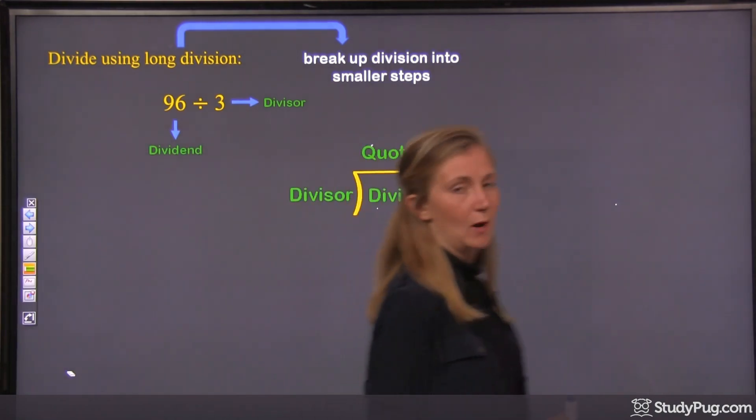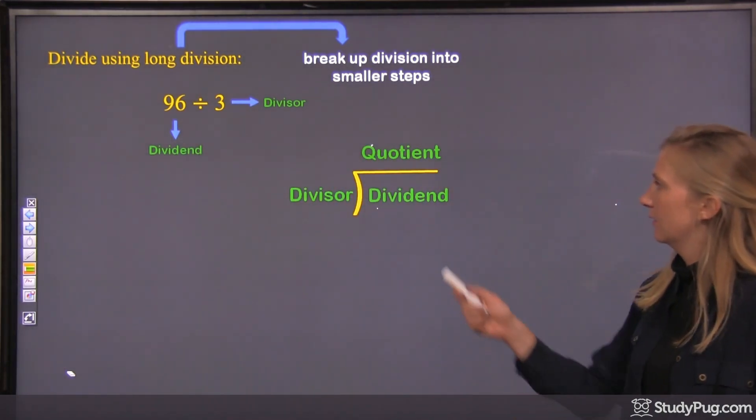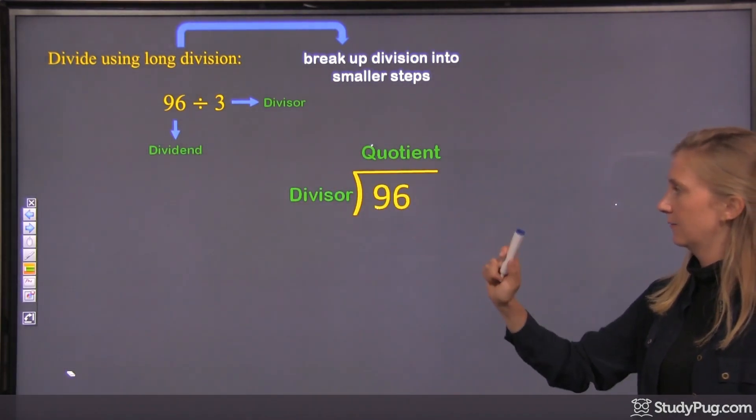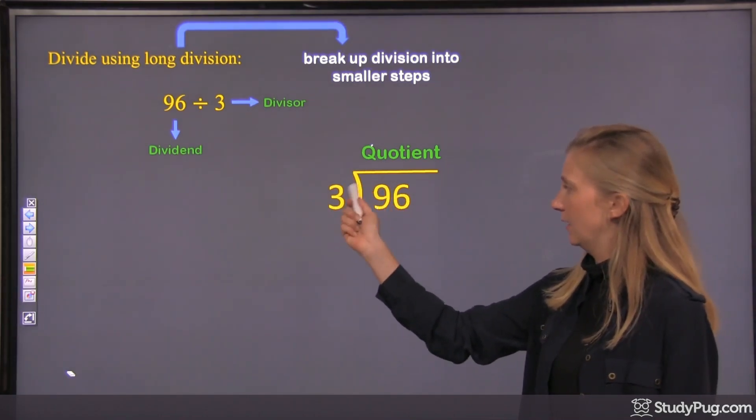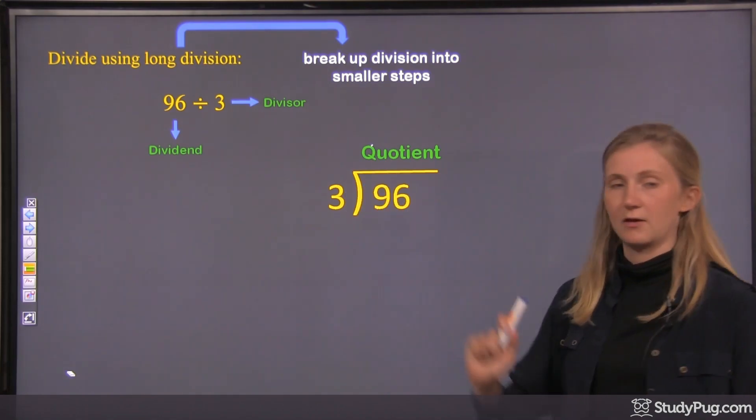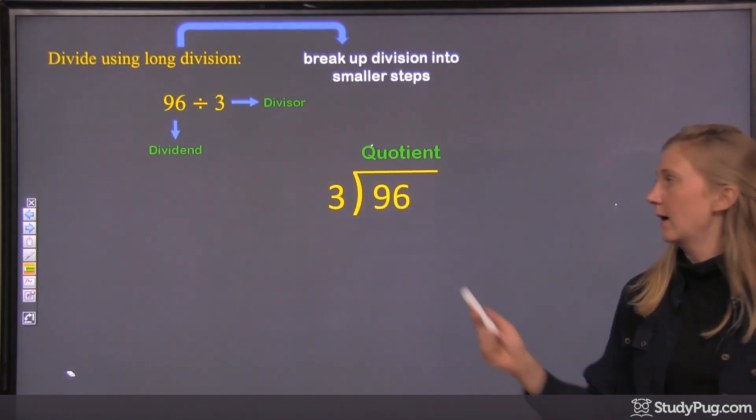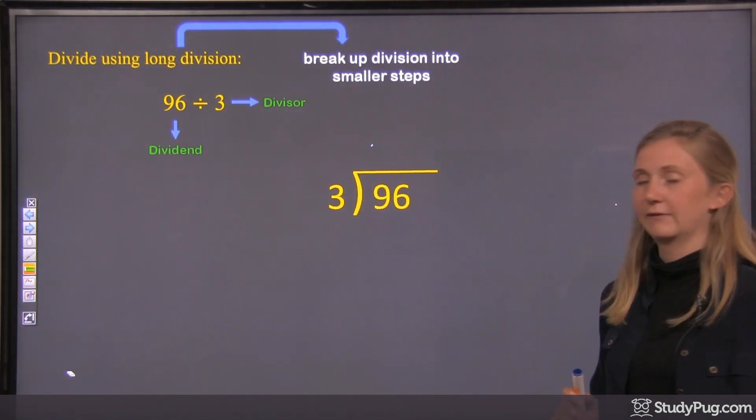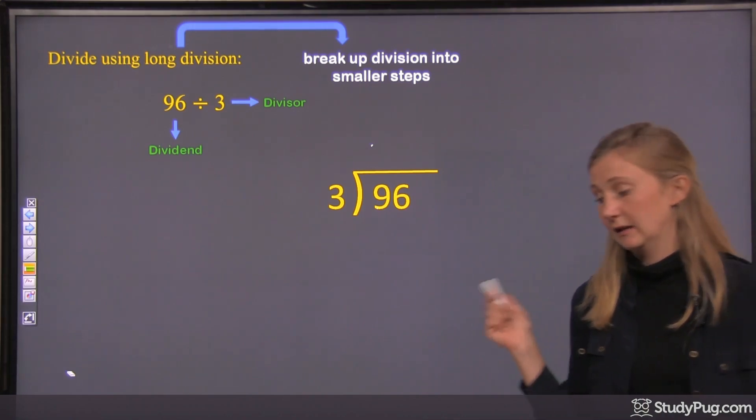All right? So in this question, 96 divided by 3, the 96 goes here, and then the 3 goes there. So 96, and we're separating it into three different groups. And the quotient, well, we don't know that yet, so we're going to leave a blank space there for our quotient.